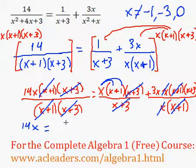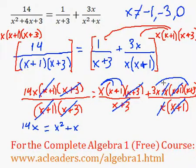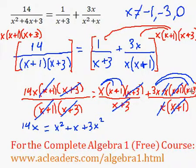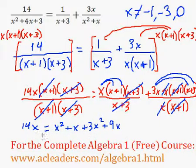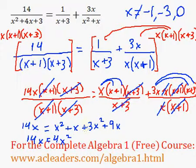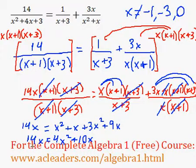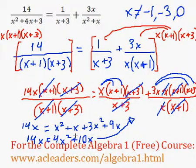Now I can distribute these elements: x times x is x squared, and x times 1 is just x. Over on the right side, 3x times x is 3x squared, and 3x times 3 is just 9x. So I get 14x equals — now x squared plus 3x squared is 4x squared, and x plus 9x is just 10x. Now I'll subtract 10x from both sides: 14x minus 10x is just 4x, which is equal to 4x squared.